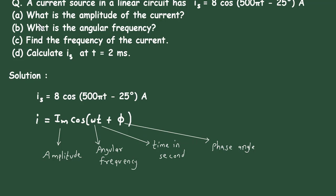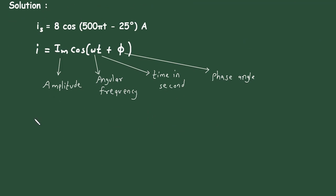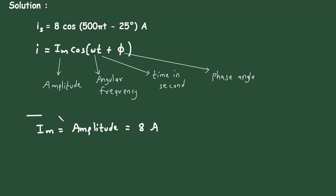Now we have to find the amplitude of the current. Here we can clearly see the amplitude Im is equal to 8. So Im equals the amplitude, and since it is current, its unit will be ampere — so 8 ampere.